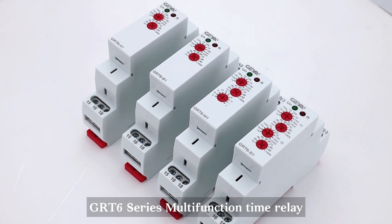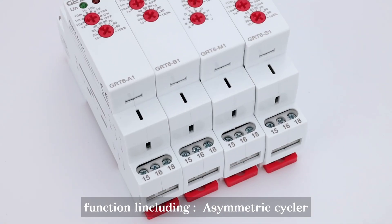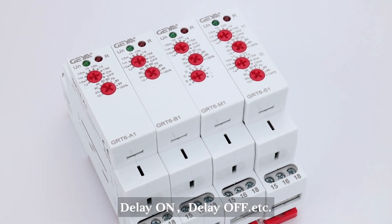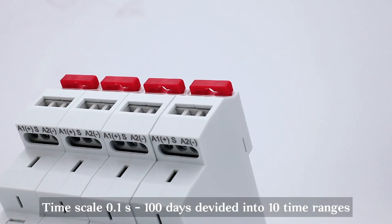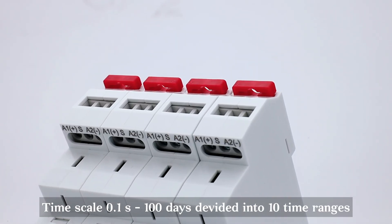GRT 6 Series Multi-Function Time Relay functional including Asymmetric, Cycler Delay, On-Delay, Off-Delay, etc. Timescale 0.1 seconds to 100 days, divided into 10 time ranges.